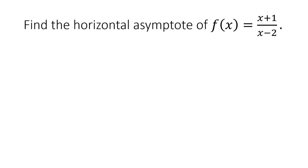Now let us consider this example: find the horizontal asymptote of f(x) = (x + 1) / (x − 2). What is the value of n — the degree of the numerator or the highest exponent of the numerator? As we can see, we have x to the first power in the numerator.